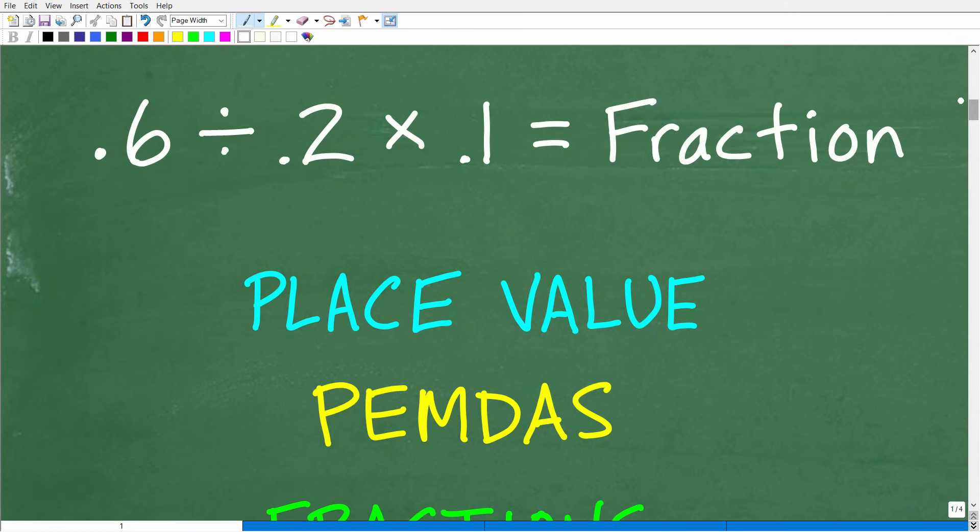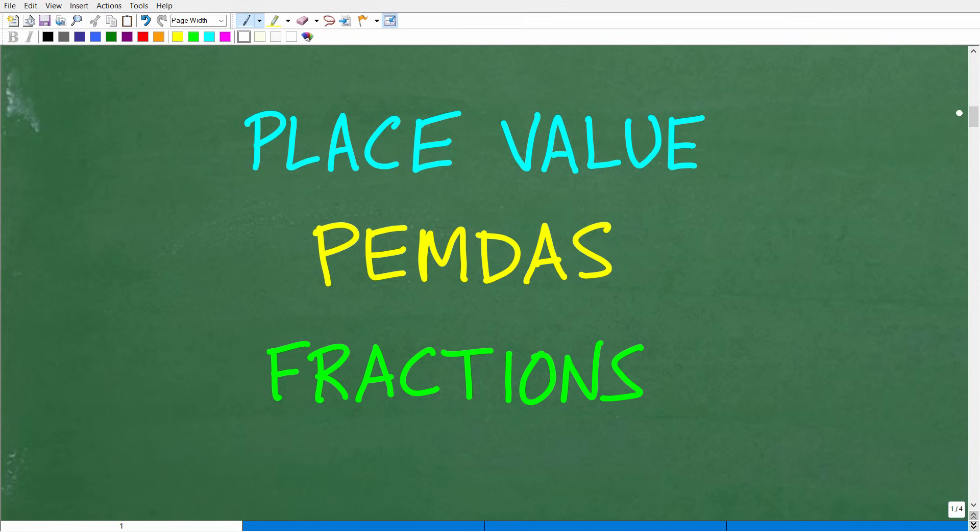To do this problem, our problem is 0.6 divided by 0.2 times 0.1. We want to do this without a calculator and express our answer as a fraction. Here are the skills we need to remember: place value, the order of operations (PEMDAS), and how to work with fractions. Let's get into this.